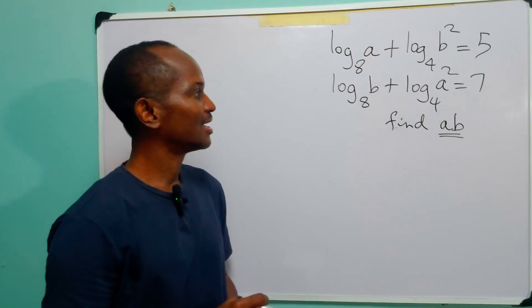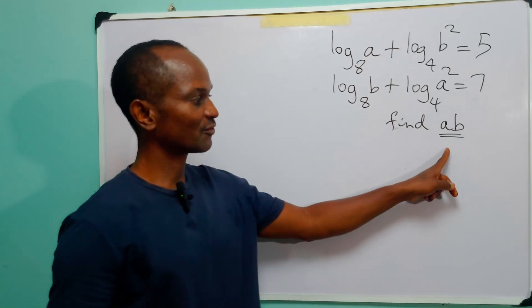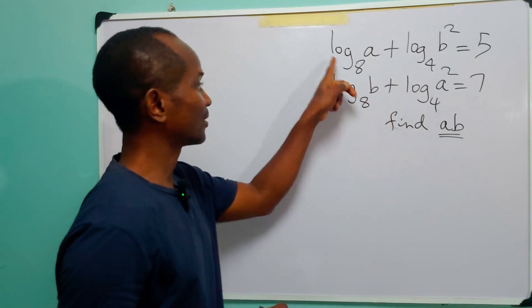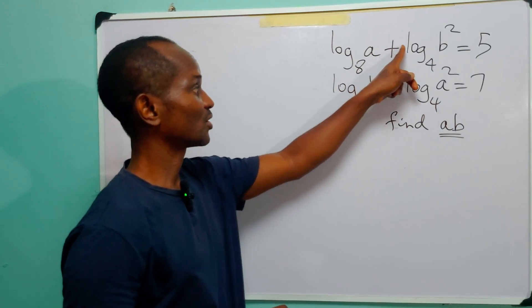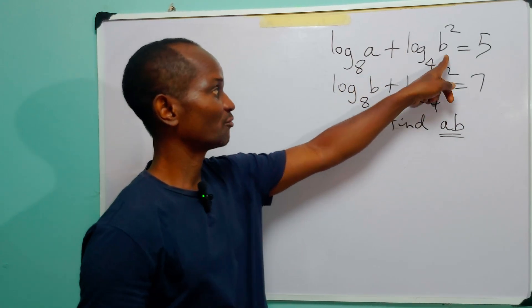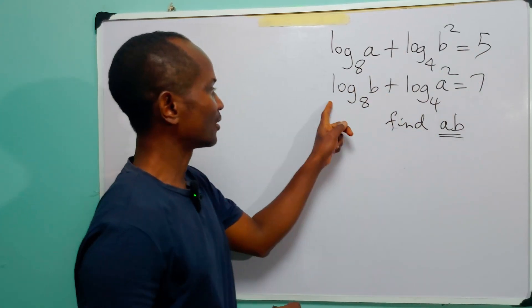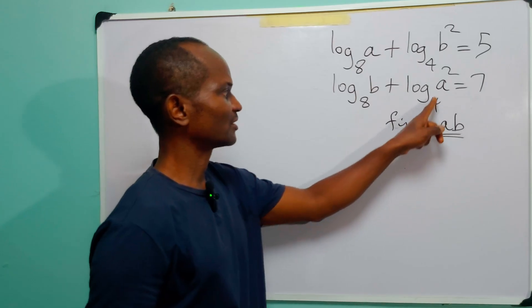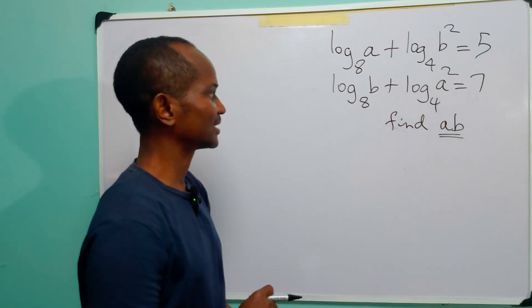Hi and welcome. Our task for today is to find the value of ab, given that log base 8 of a plus log base 4 of b squared is equal to 5, and log base 8 of b plus log base 4 of a squared is equal to 7.